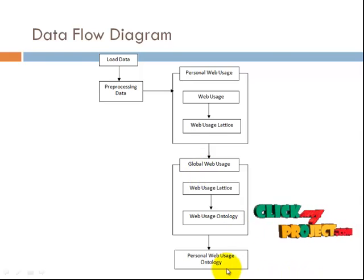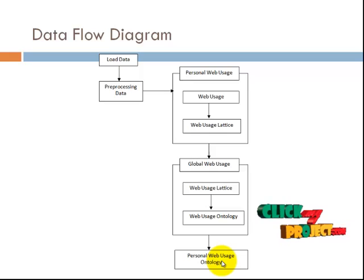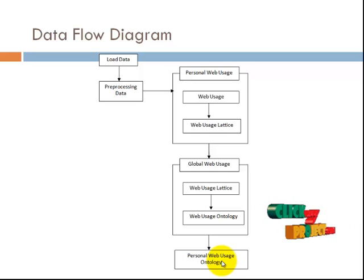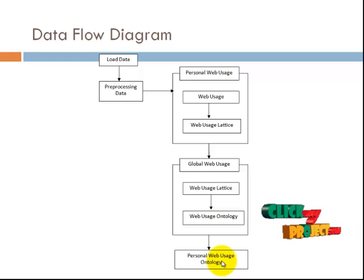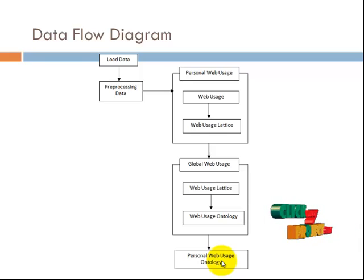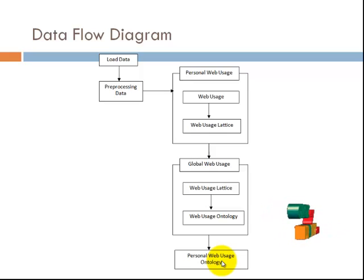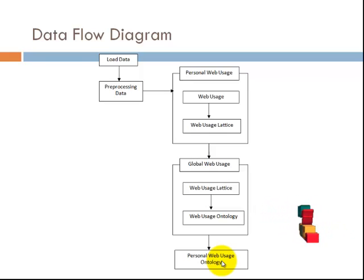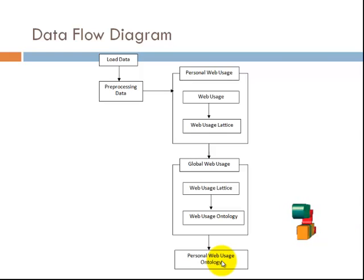The final phase is personal web usage ontology. We collect all users' data from web access sessions, calculate support and confidence values, and generate the personal web usage lattice. From this, we generate the personal web usage ontology — a set of activity instances from corresponding activity classes in the GWU and an activity instance hierarchy. All personal web usage activities in the PWL are mapped to activity instances based on global web usage activity, with each instance named based on its corresponding activity class and user.